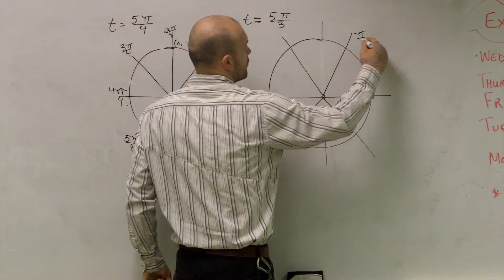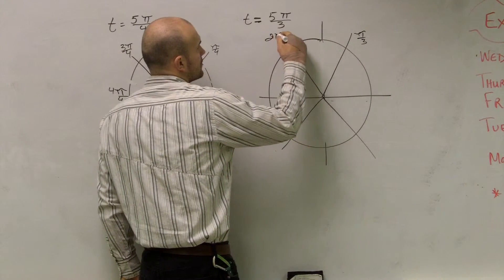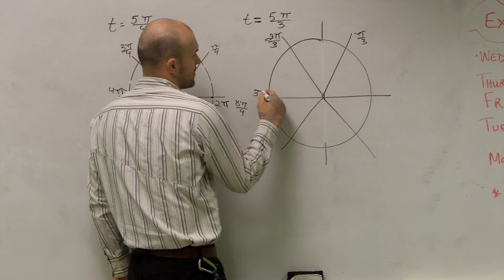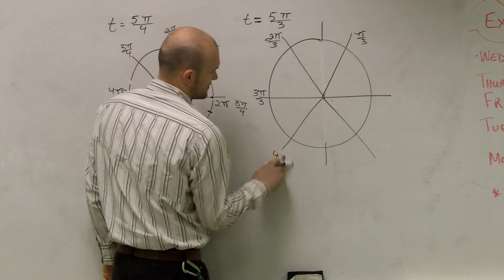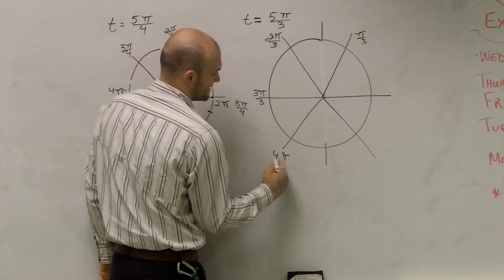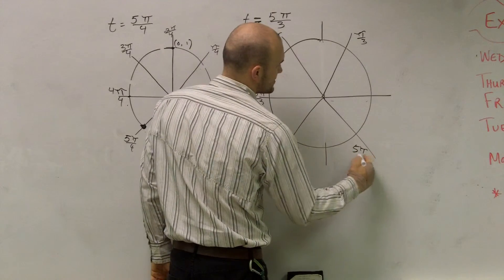So therefore, this would be one third, two thirds, three thirds, four thirds, five thirds, four thirds.